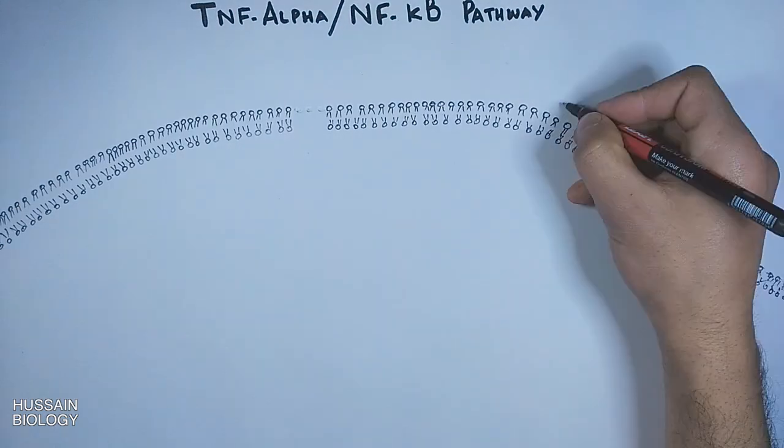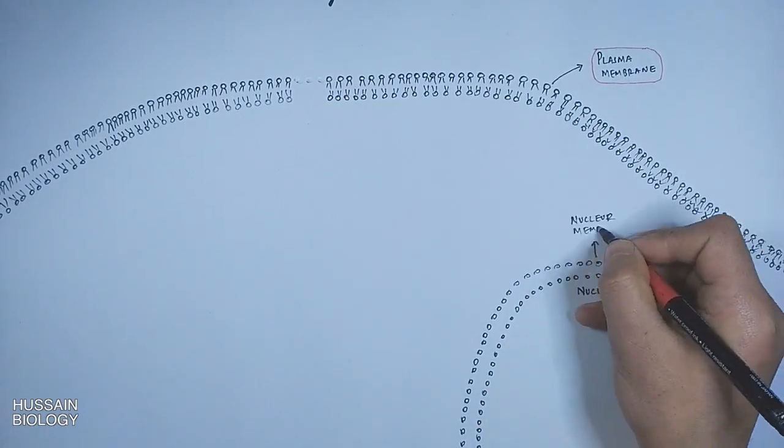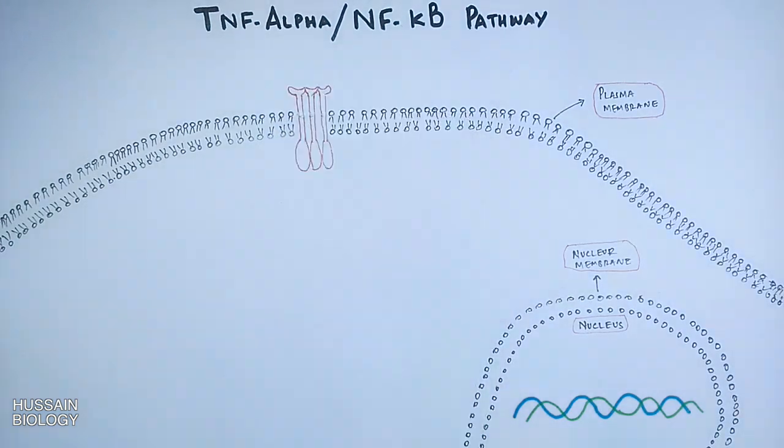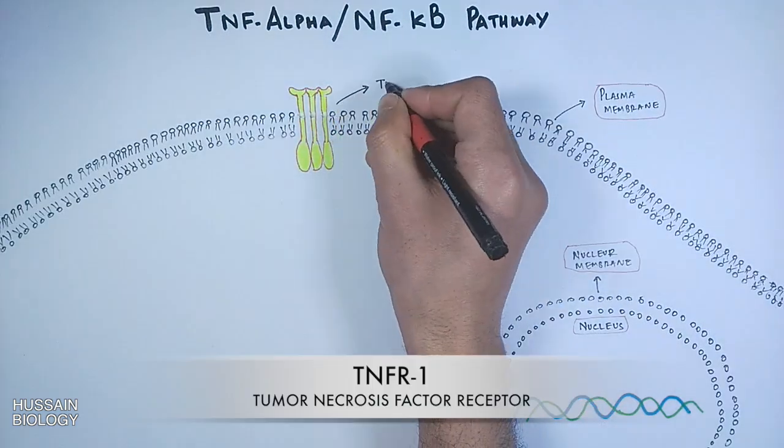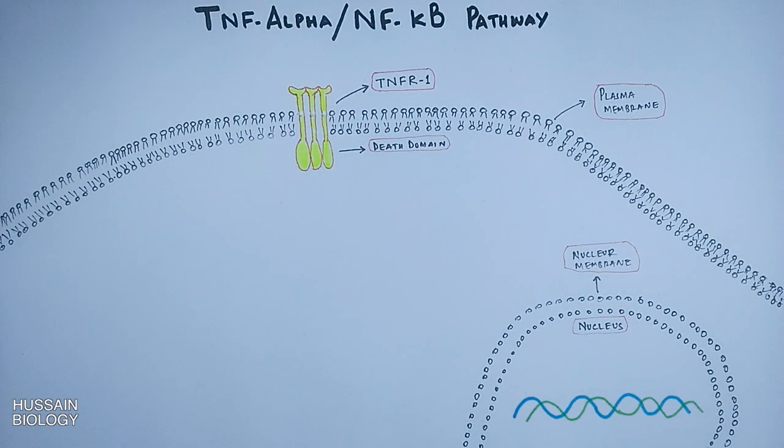In this diagram we can see a cell with the outer membrane as the plasma membrane and the inner as the nuclear membrane. On the plasma membrane it has a TNFR1 receptor, or TNF receptor, having a death domain on its intracellular side.